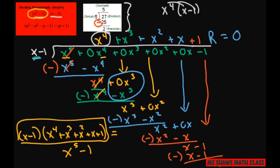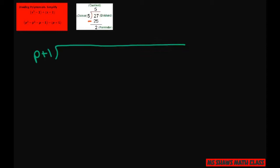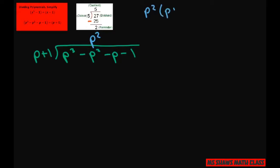For the next one we do the same thing — we don't need placeholders here. We have p plus 1 and we're dividing p cubed minus p squared minus p minus 1. The first term is going to be p squared. p squared times p plus 1 gives me p cubed plus p squared.